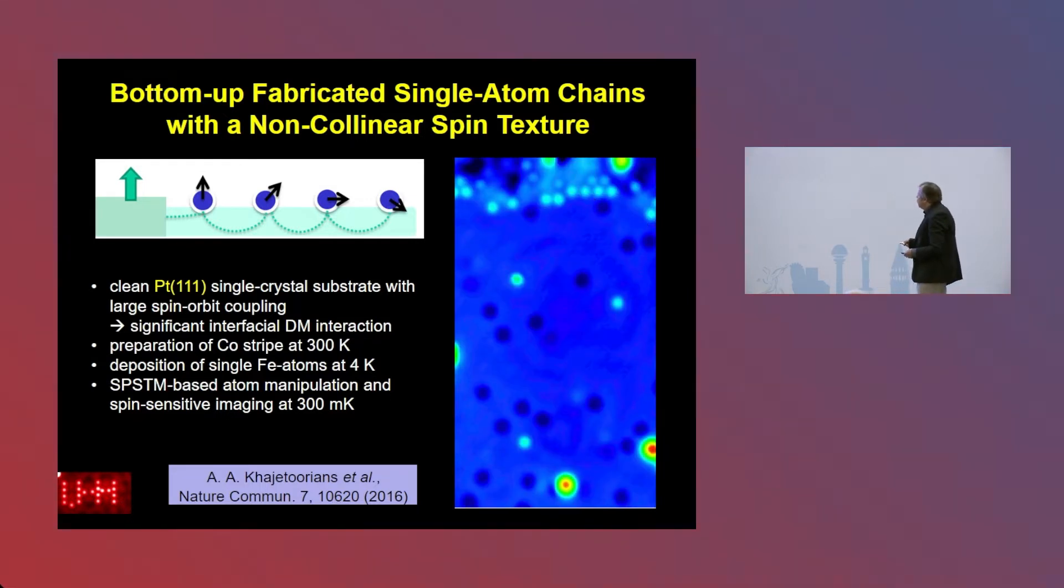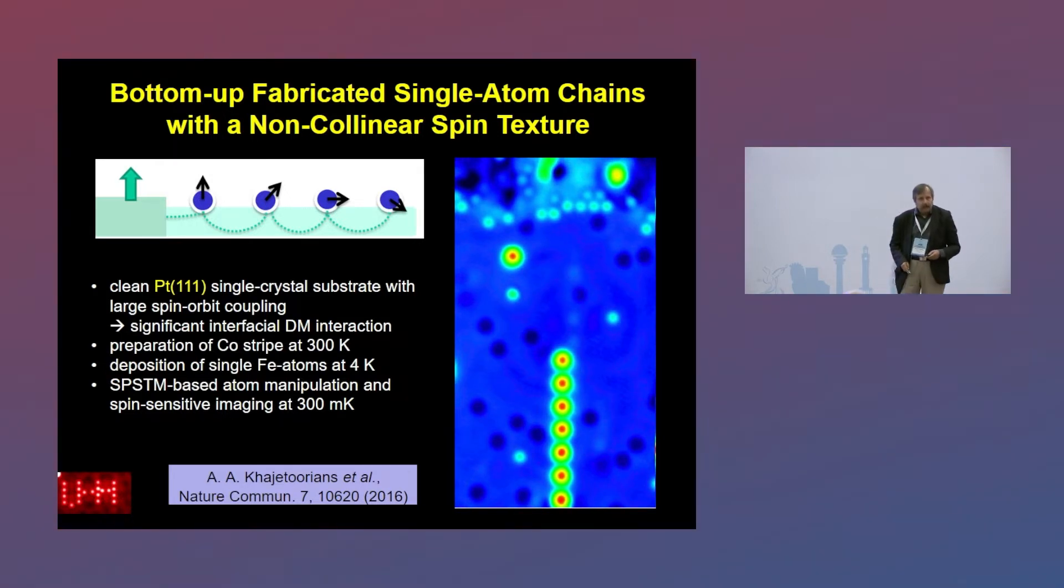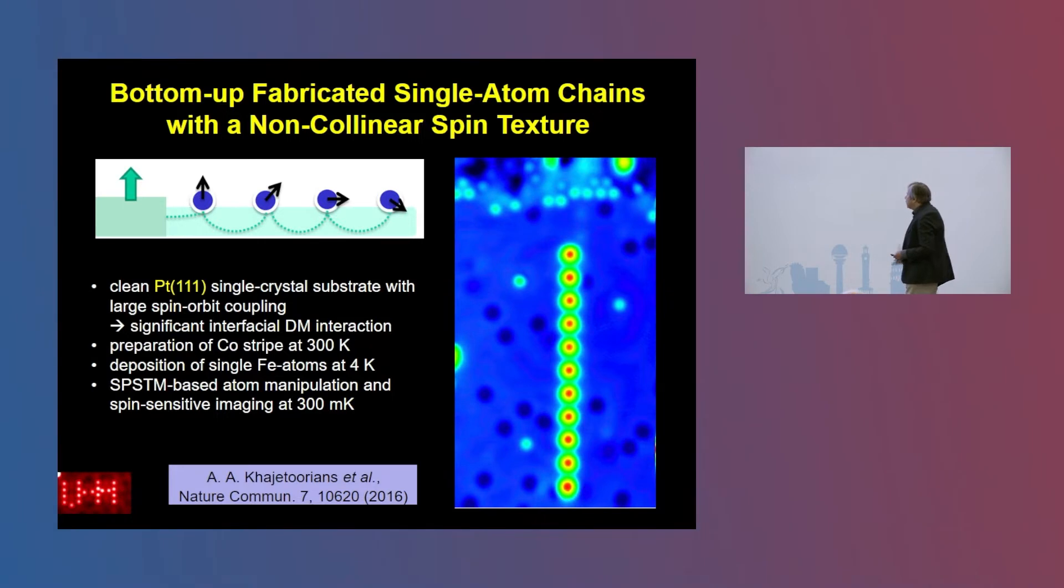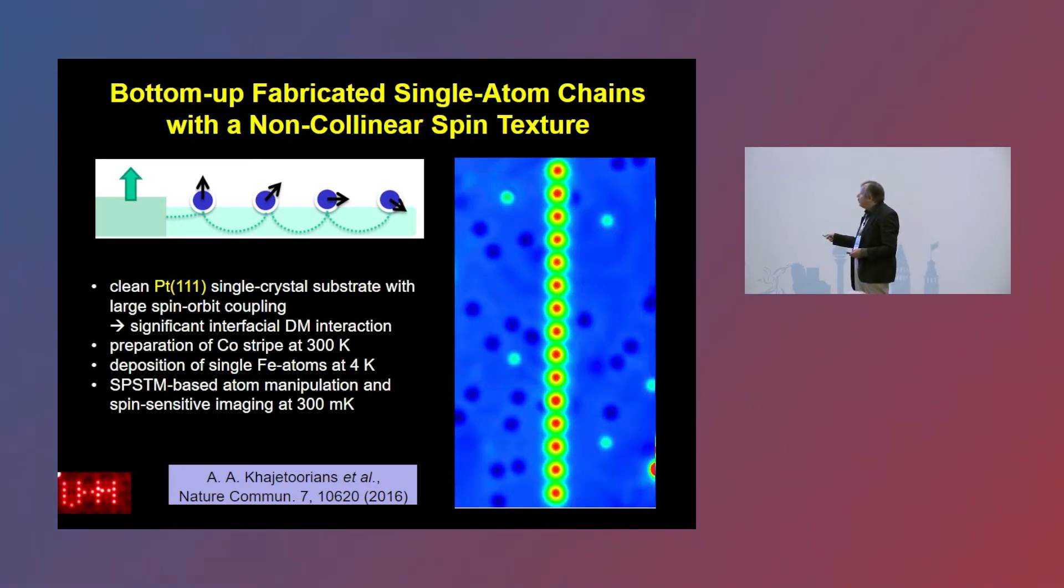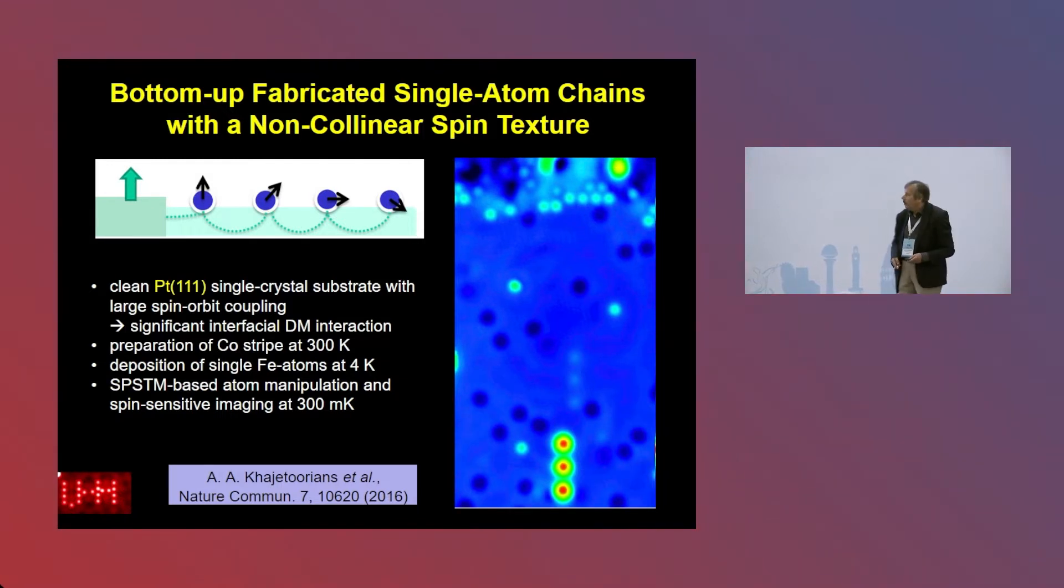And what we can do is we can really predefine the distances between the atoms. We can also select the species here. We can select the substrates. In this case we have purposely chosen a substrate where we expect high spin orbit coupling.